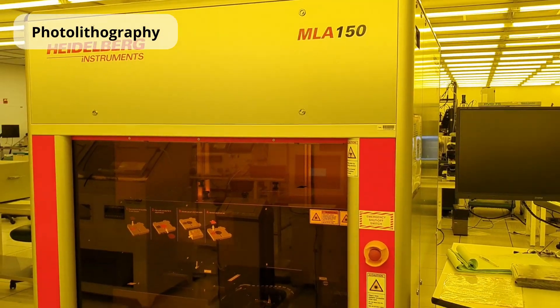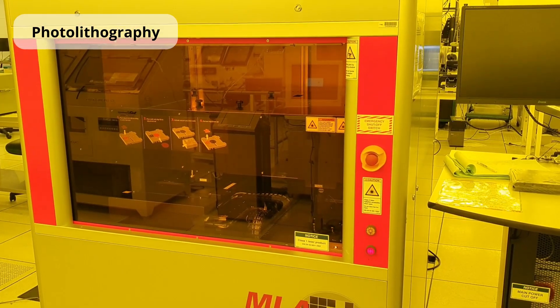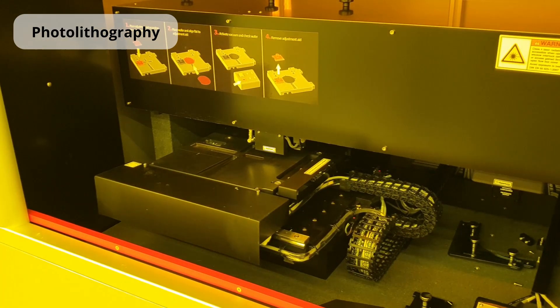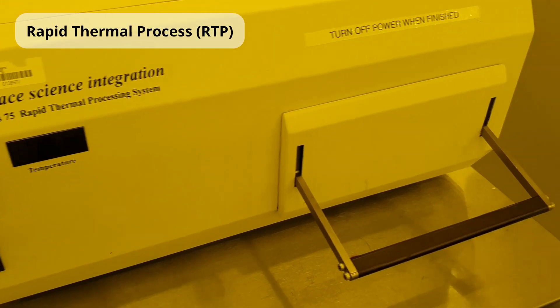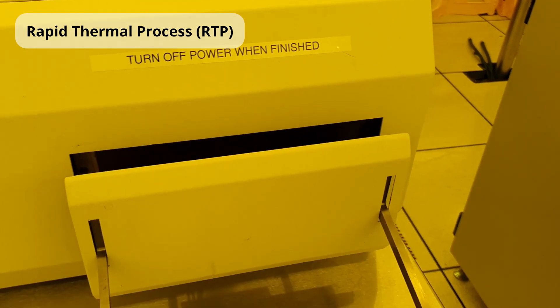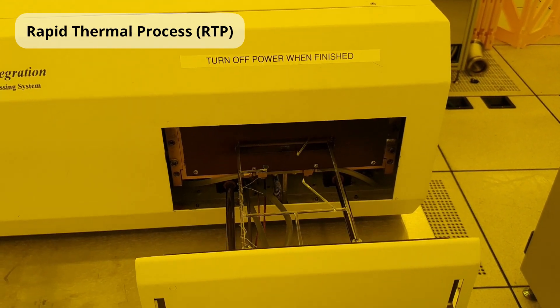This is a photo lithography tool named MLA, which we use to create the patterns. And this is a RTP tool, which is used to anneal hafnium zirconium oxide to bring out their ferroelectric properties.